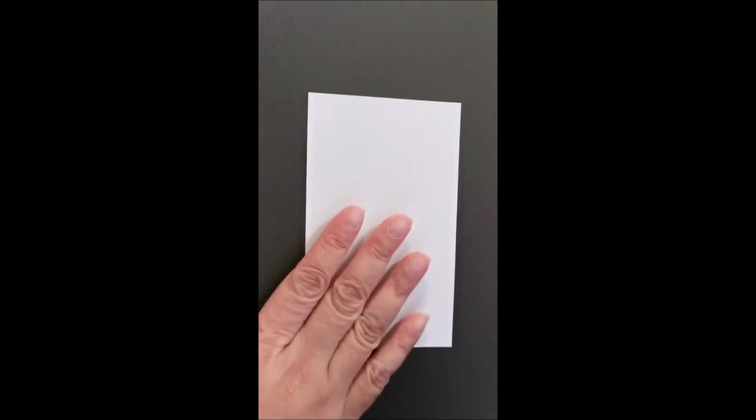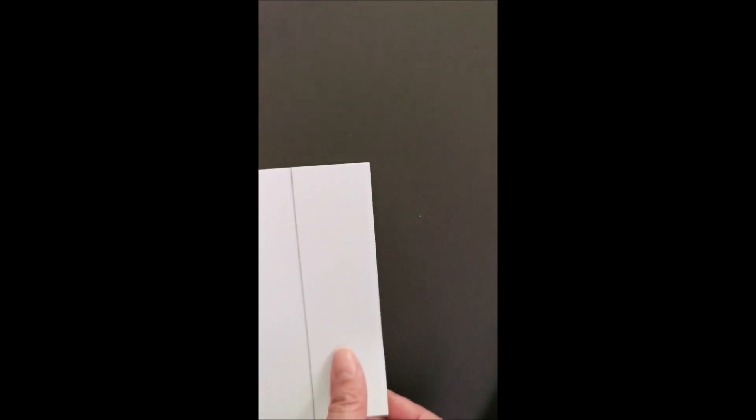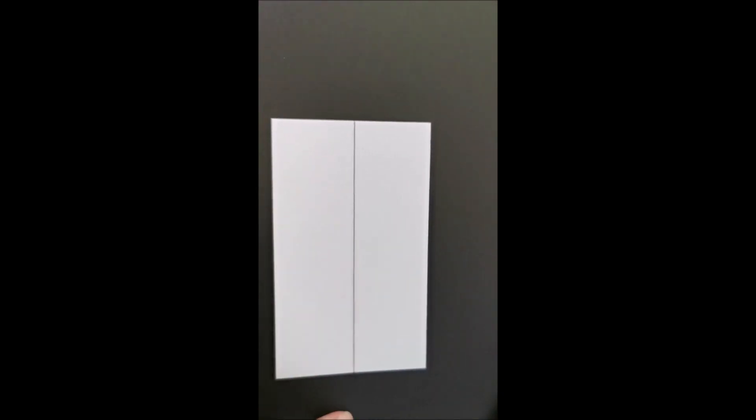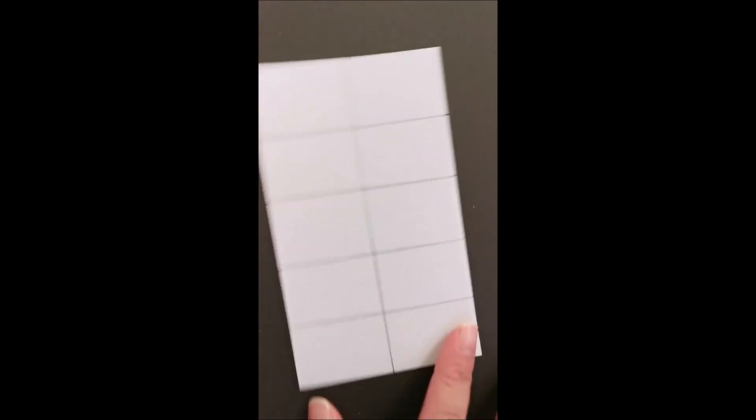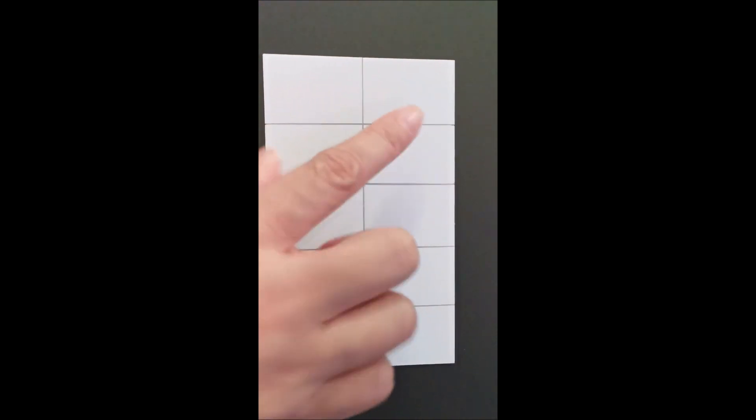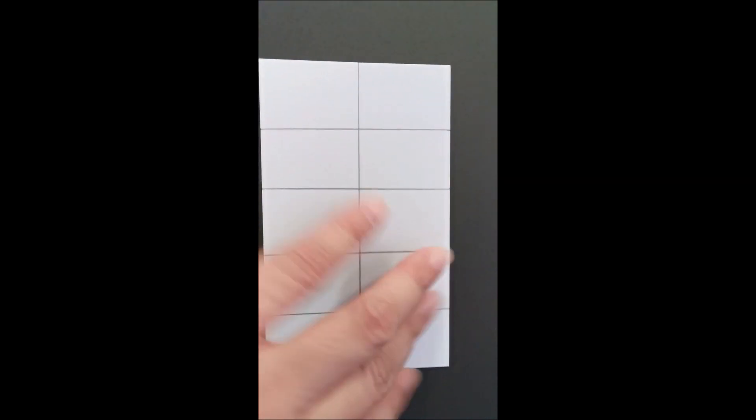Once you have your card, you put a line right across it dividing it into two parts. Each part is going to have a small frame, so the top half should have five frames and the bottom half should have five.